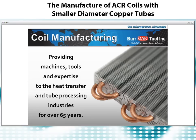The industry trend toward round copper tubes with smaller diameters is something Burr Oak actually started dealing with years ago when manufacturers started replacing half-inch tubes with three-eighths in the 1960s. More recently, three-eighths diameters are being replaced with five-sixteenths and seven-millimeter designs. There are good reasons to reduce tube diameters even further, and many of our customers are now turning to us for equipment that can produce redesigned coils with five-millimeter diameter micro-groove copper tubes. We'll take the next few minutes to look more closely at coil manufacturing and what it takes to manufacture coils with tubes as small as five millimeters.